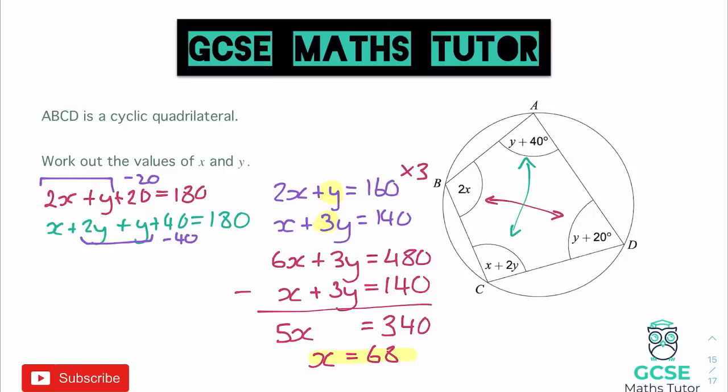From here we just need to get our value of y. So we need to substitute that value x equals 68 into one of our equations. I'm going to substitute it into the top one. So we have 2 lots of 68—and that's my 2x—plus y, and that is equal to 160. Now 2 times 68 is 136, so 136 plus y is equal to 160. And from there I just need to take away 136 from both sides, and we get y is equal to 24, and there is our final answer.